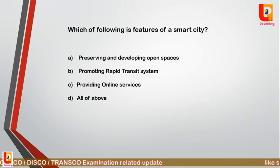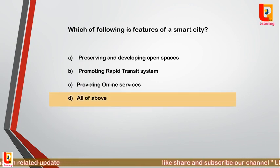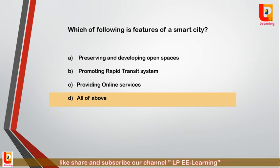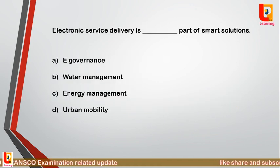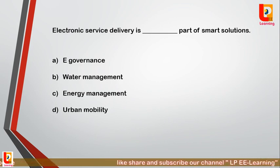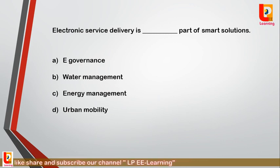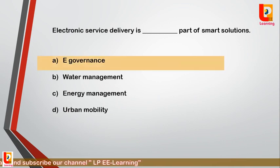Question 21: Which of the following is a feature of the smart city? Correct answer is option D: all of the above — that is, preserving and developing open space, promoting rapid transit systems, and providing online services are features of the smart city. Question 22: Electronic service delivery is part of which smart solution — option A: e-governance; option B: water management; option C: energy management; option D: urban mobility? Correct answer is option A: e-governance. Electronic service delivery is the e-governance part of the smart solution.